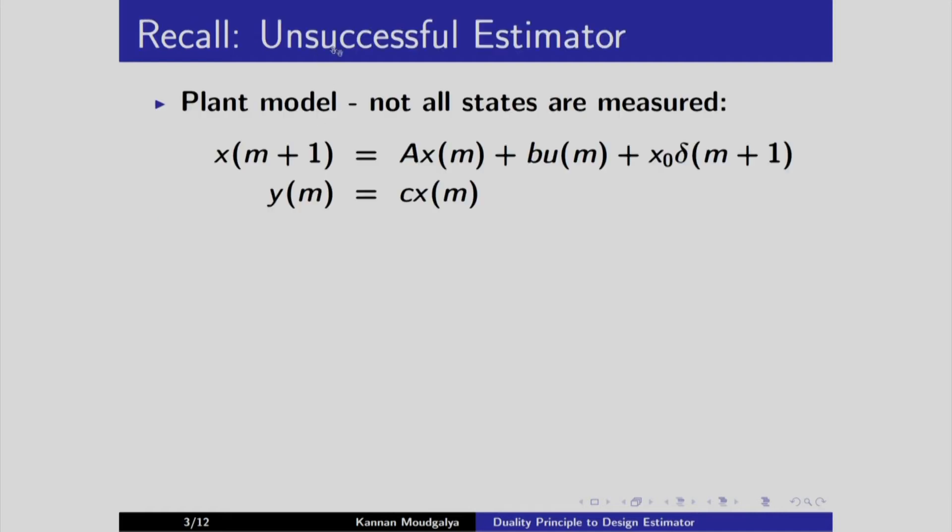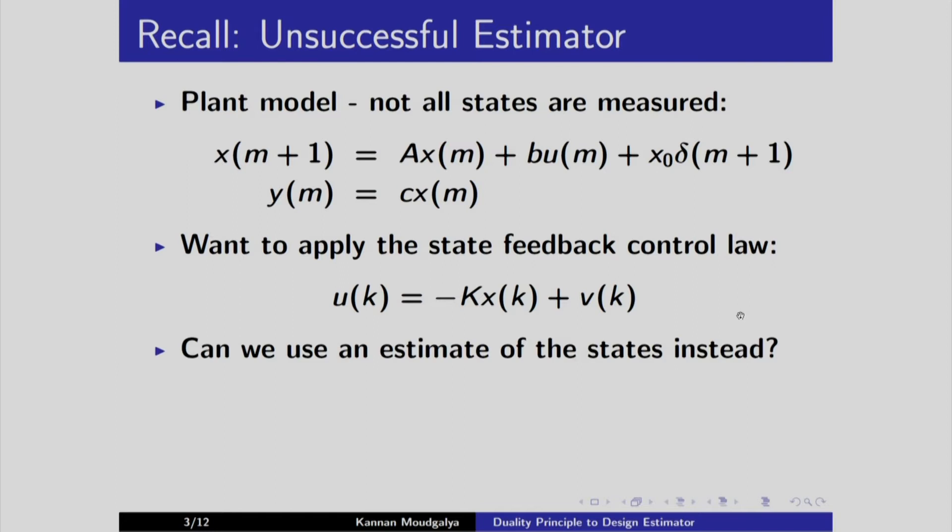Let us recall the unsuccessful estimator that we presented in the previous lecture. We have the state equation and output equation. We want to apply the state feedback control law. We wanted to use an estimate. We proposed an unsuccessful estimator.